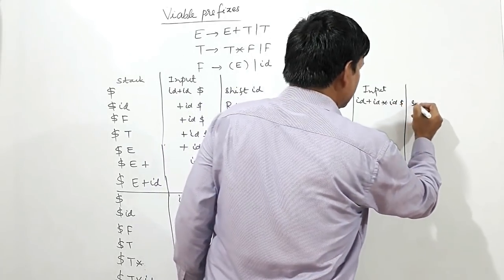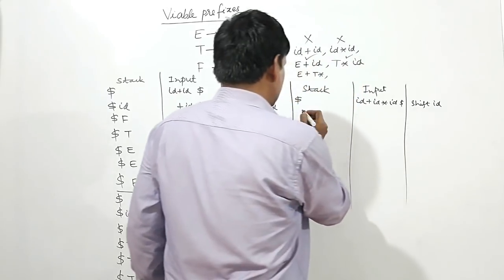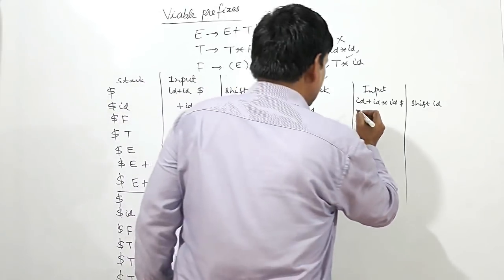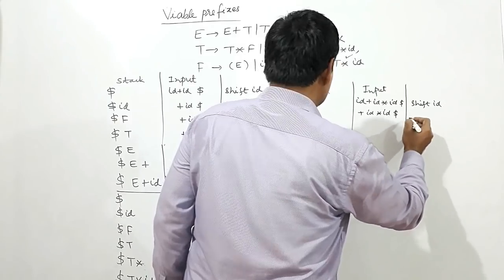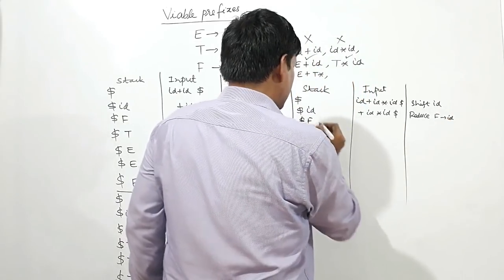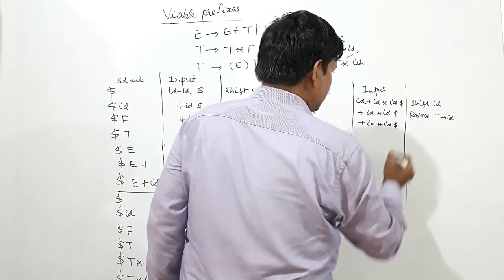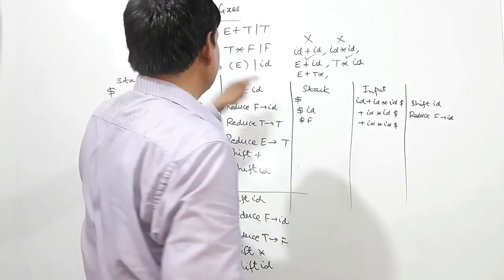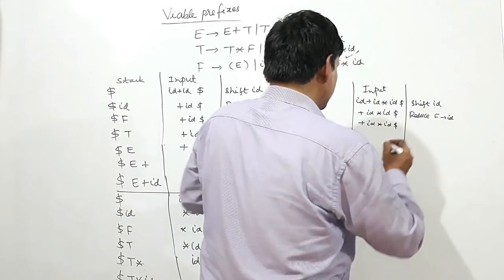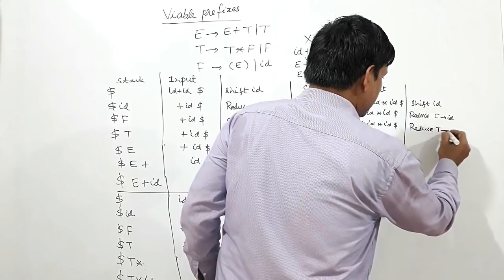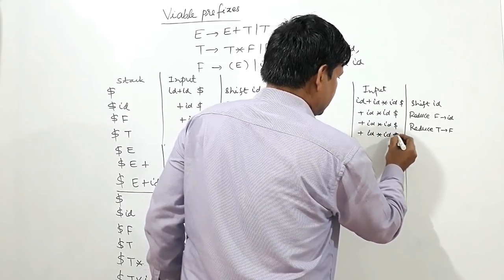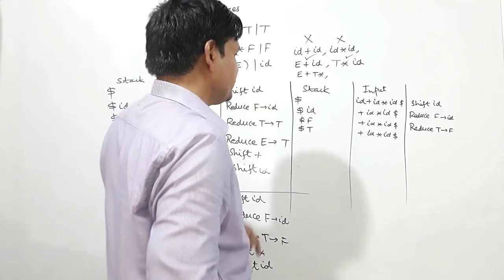Input is ID plus ID star ID dollar. I shift ID. Reduce ID by F — dollar F plus ID star ID dollar. F and plus: no match of F and plus, so reduce F by T — dollar T plus ID star ID dollar.